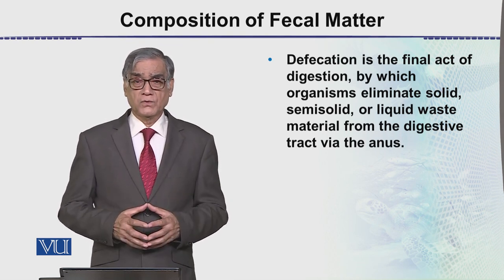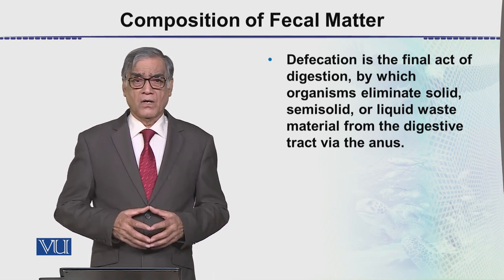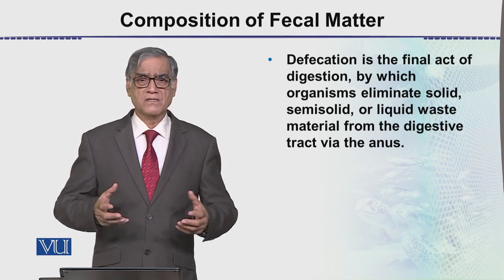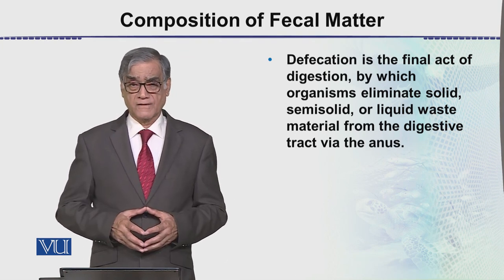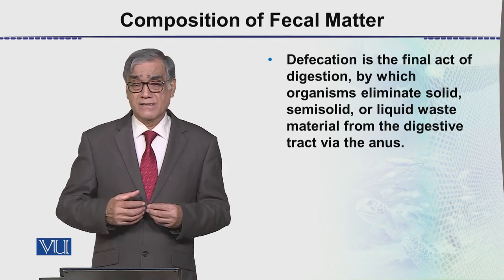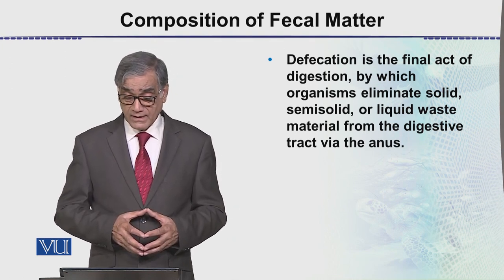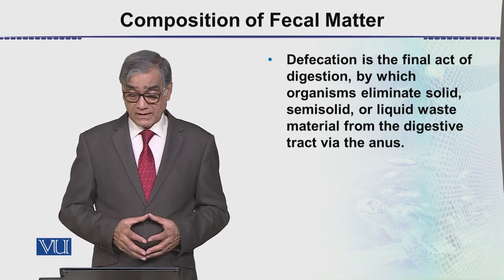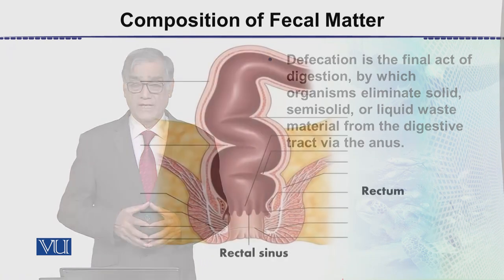Excretion is the removal of nitrogenous waste — the urea, uric acid, etc. Defecation should not be confused with that excretion. Defecation is in fact the elimination of undigested matter from the body, by which organisms eliminate solid, semi-solid, or liquid waste material from the digestive tract via the anal aperture or the anus.